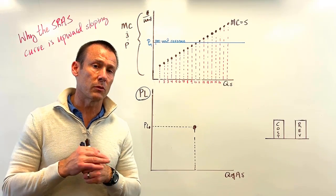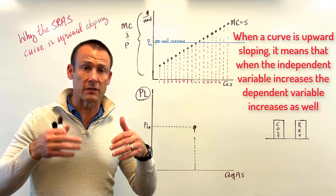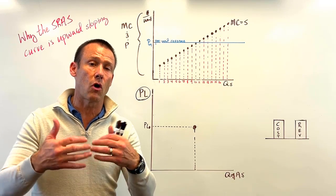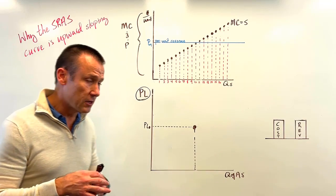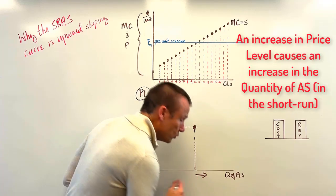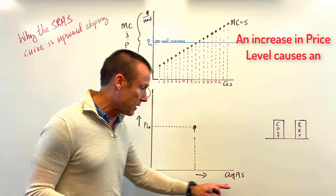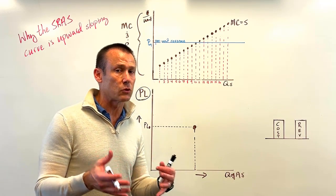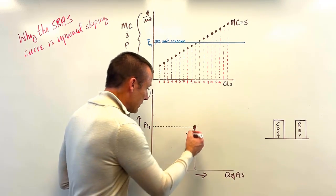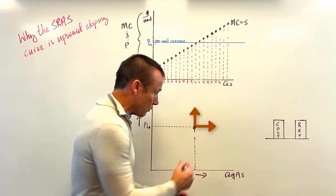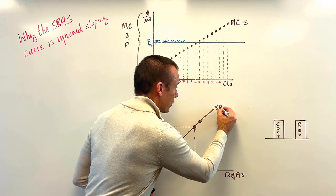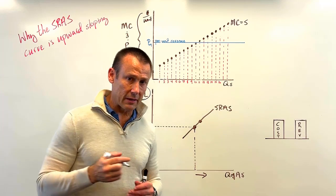When we say something is upward sloping, we mean that when the independent variable increases, the dependent variable also increases — a direct relationship. The independent variable here is the price level. When that price level goes up, we will produce more. So a new dot must be above and to the right of the original, and connecting those two dots gives you an upward sloping line.